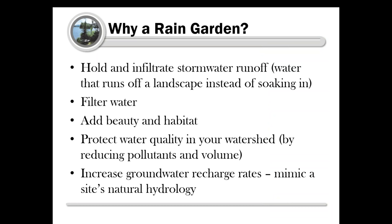Rain gardens hold and infiltrate stormwater runoff - the water that runs off a landscape instead of soaking in. This includes anything that falls on your rooftop, driveway, or even lawn in compacted areas. They filter water as it moves down through the layers of soil in the rain garden. They add beauty and habitat, but the key distinction is a real focus on protecting water quality in the watershed by reducing pollutants held in stormwater and the volume of stormwater, which can be problematic for aquatic organisms. They also increase groundwater recharge rates, mimicking a site's natural hydrology.